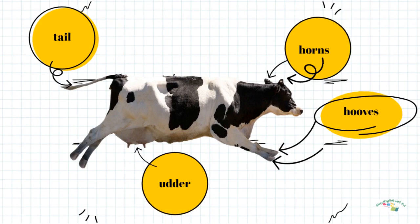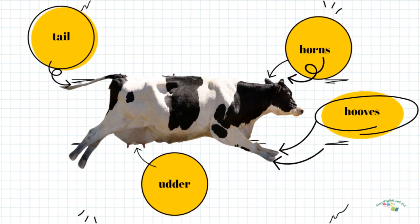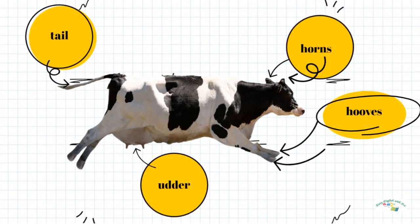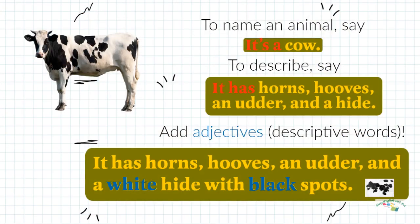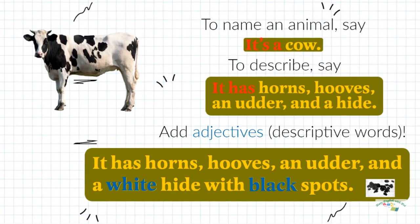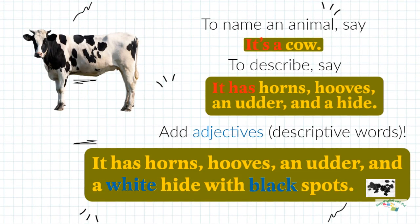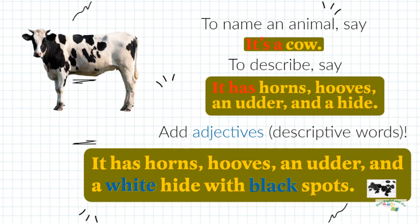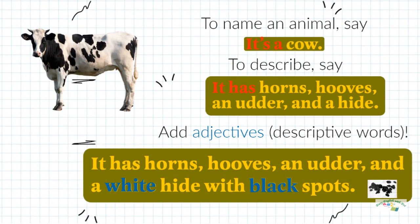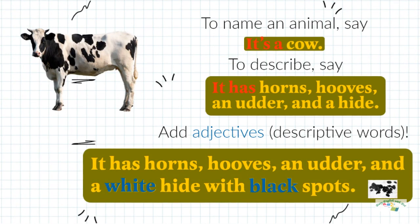Tail. Horns. Hooves. Udder. It's a cow. It has horns, hooves, an udder and a hide.